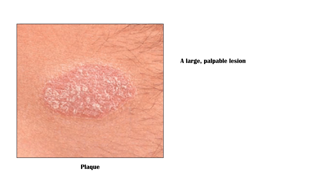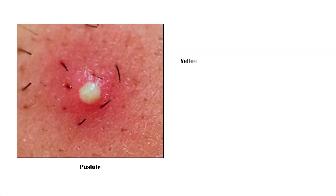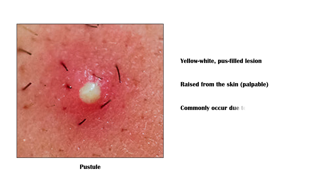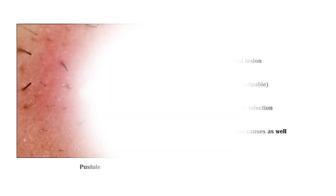A plaque is a larger, palpable lesion. Its top is flat, and it is raised above the skin surface. A pustule is a yellow-white pus-filled lesion, which is raised above the skin surface, hence palpable. They commonly occur due to infection; however, there are non-infective causes as well.